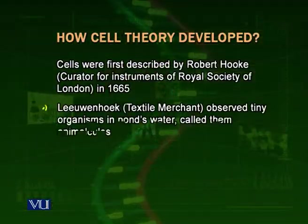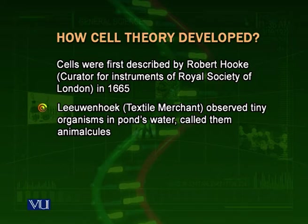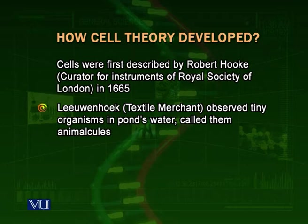He observed in thin slices of cork some sort of cells. Now we know that he observed certain dead cells. Later on, another person who was actually a textile merchant also developed magnifying lenses and made a sort of microscope. With that microscope, he observed different types of unicellular organisms in pond water. He was Leeuwenhoek. So Leeuwenhoek observed unicellular organisms and Robert Hooke observed plant cells.